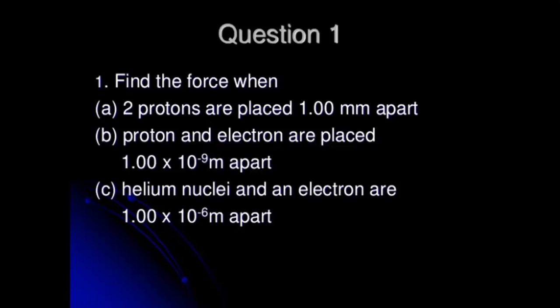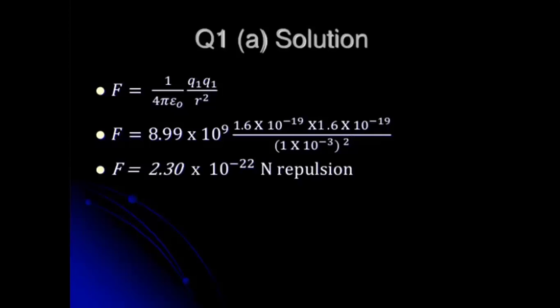We have the first example: find the force when two protons are placed 1 mm apart. For B, a proton and electron are placed 10 raised to negative 9 meters, or 1 nanometer, apart. And for C, a helium nucleus and electron are 1 micrometer apart.